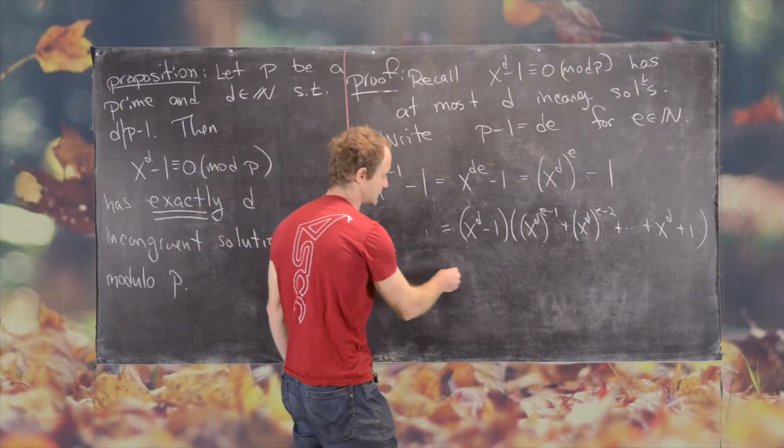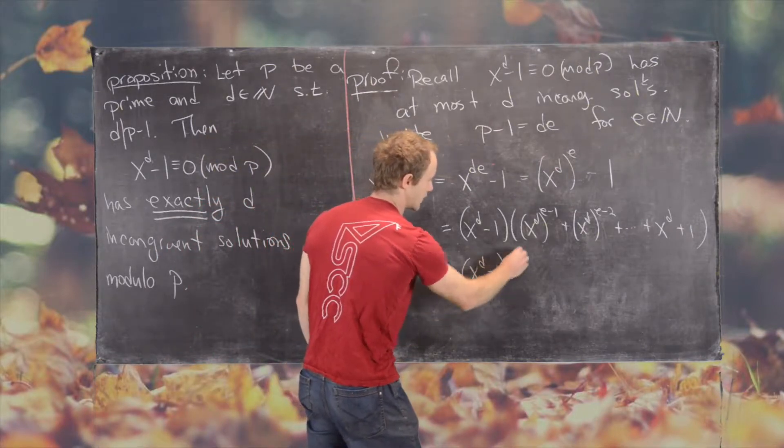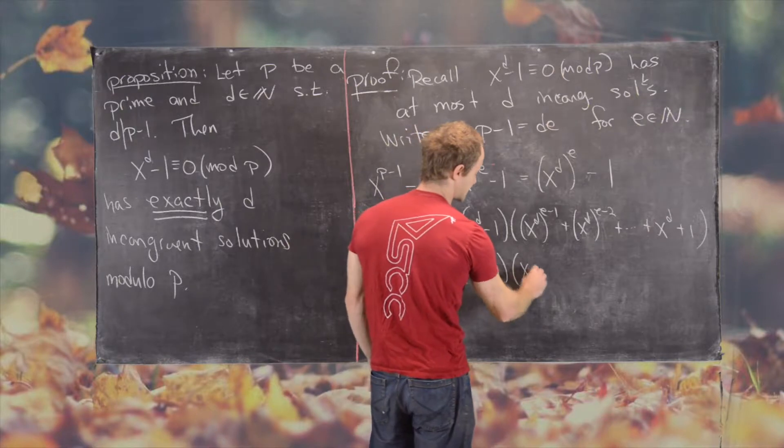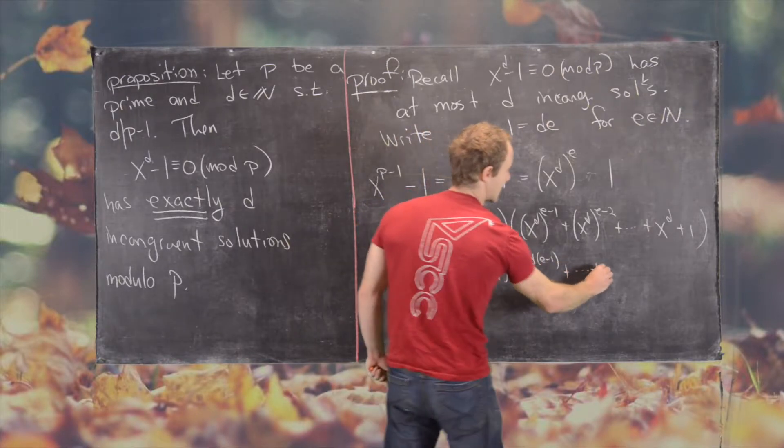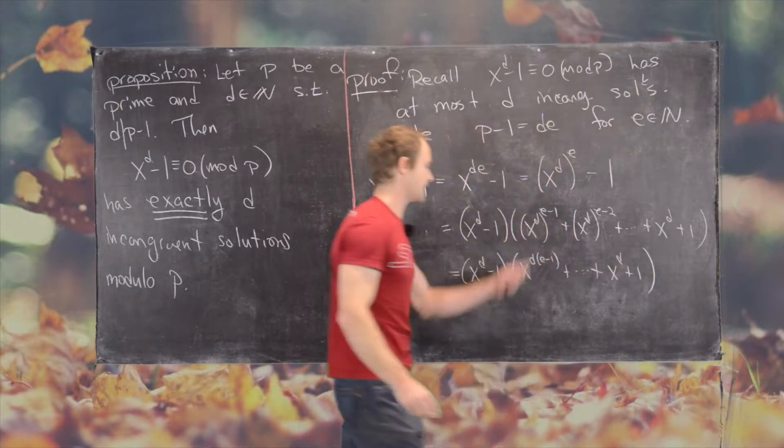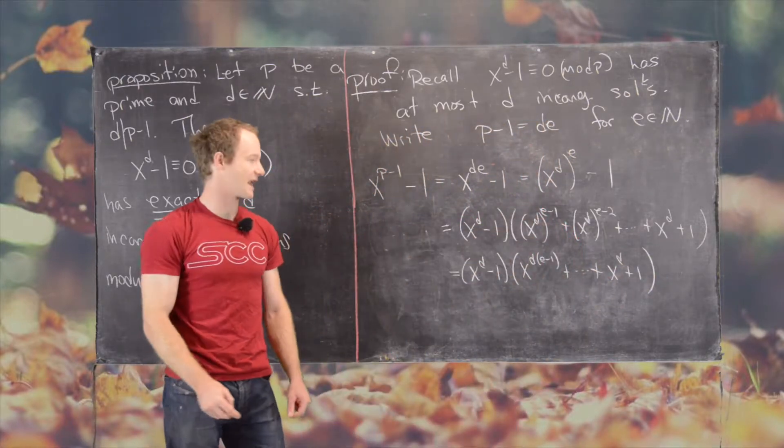But now notice we can write that as x to the d minus 1 times x to the d times e minus 1 all the way down to x to the d plus 1 using our exponent rule to simplify that as needed.